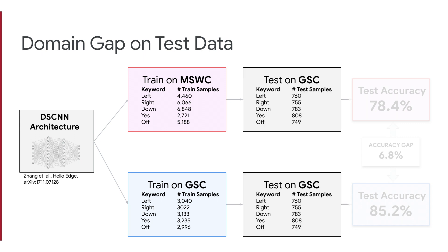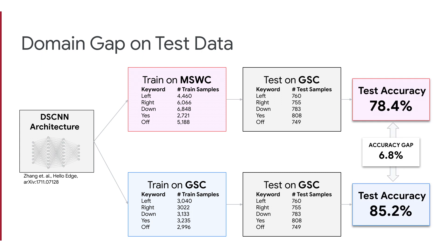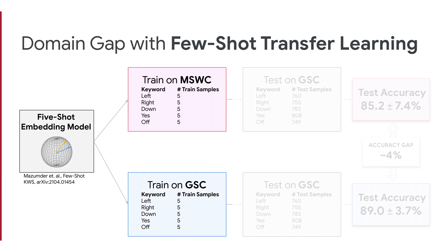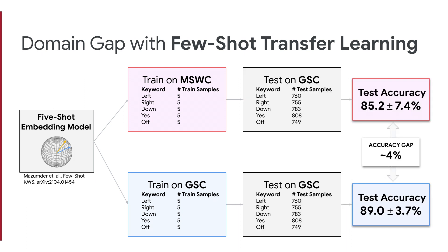We evaluate both models on the test split of Google Speech Commands and observe an accuracy gap smaller than 7%. We also evaluate our dataset's suitability for few-shot transfer learning by fine-tuning an embedding model on just five training samples drawn from our dataset or Google Speech Commands, respectively, and then again evaluate these models on the same test split from Google Speech Commands. We observe an accuracy gap here of approximately 4%, suggesting our dataset is well-suited for keyword spotting applications in very low-resource languages.